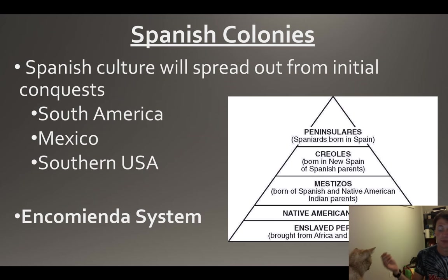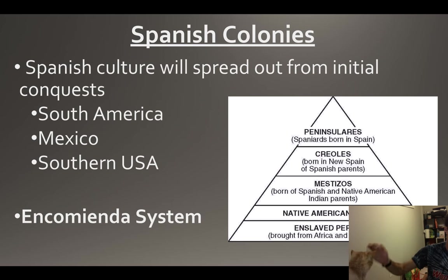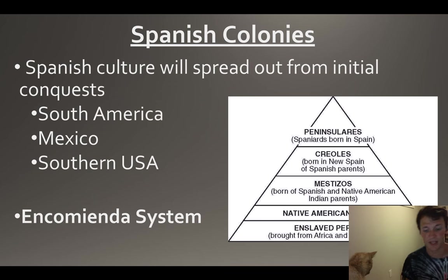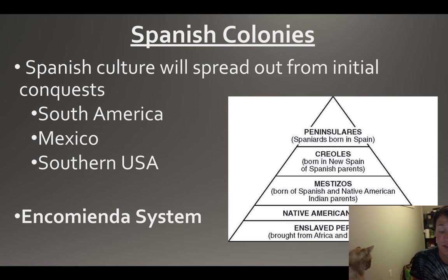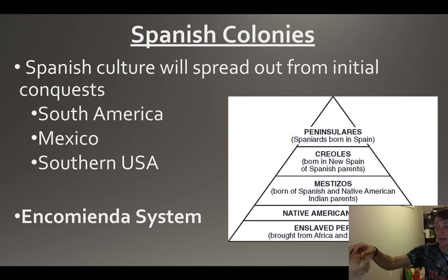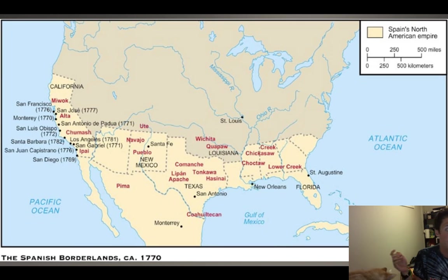The Native Americans are going to be somewhat enslaved; their religion is going to be converted. They're working alongside enslaved Africans. Sadly, a number of these Native Americans are going to be killed - over 90% of Native Americans are going to be wiped out by diseases between Columbus arriving and the first English settlement.